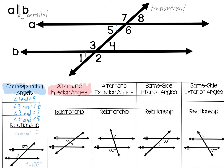How do we know which ones are alternate interior and which ones are same side interior? Alternate and same side refer to the sides of the transversal. Notice how angle 3 is on the opposite side of the transversal from angle 6. That means angle 3 and angle 6 are considered to be alternate interior angles.